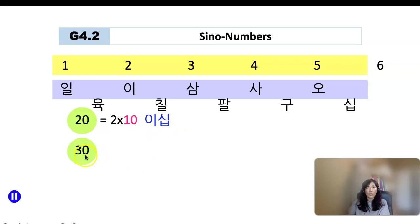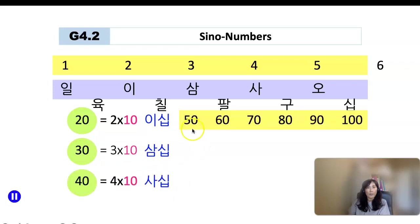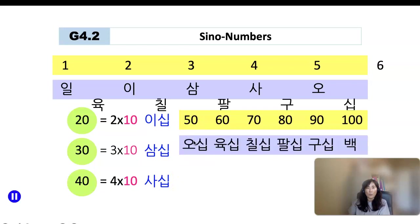How about 30? It's 삼십. 40 is 사십. How about 50? 오십. 60 is 육십. 70 is 칠십. 80 is 팔십. 90 is 구십. And 100 is 백.